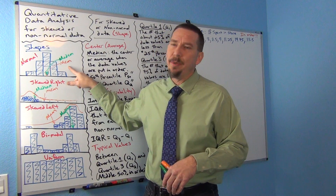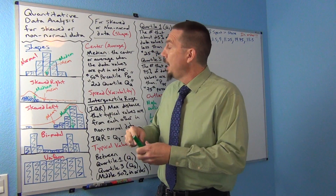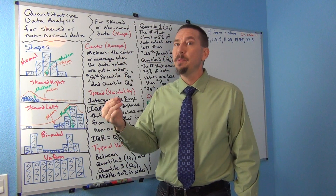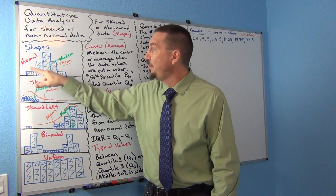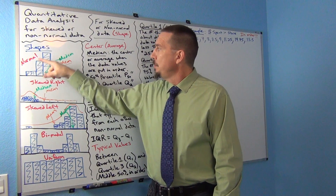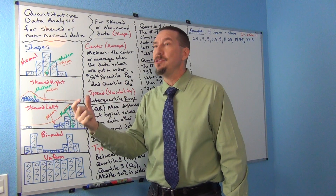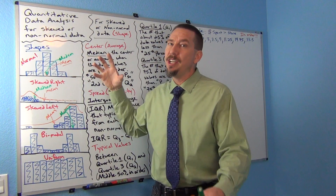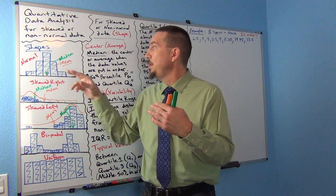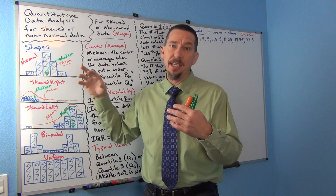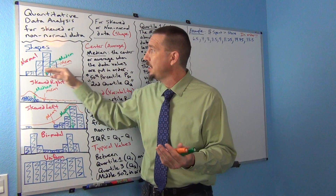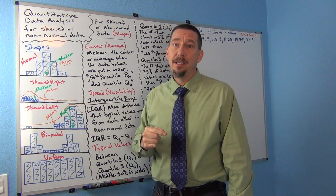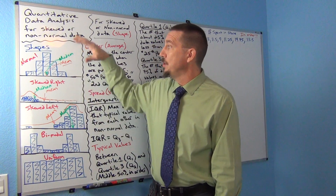There is a reason we use the mean when data is normal, and it's about the standard deviation. The standard deviation measures how far typical values are from the mean — not from the median — so it's connected to the mean. Standard deviation is much more accurate for normal data, but not accurate for skewed data. So for non-normal data, we won't use the mean and standard deviation.